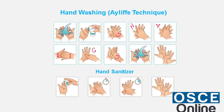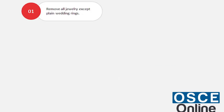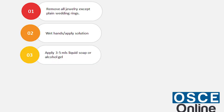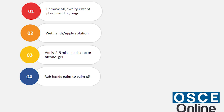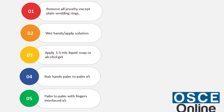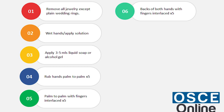For the AYLIFT hand washing technique, the whole procedure should take at least 30 seconds. Remove all jewelry except plain wedding rings. Wet hands, then apply three to five ml of liquid soap or alcohol gel. Rub hands palm to palm five times, then palm to palm with fingers interlaced five times, then back of both hands with fingers interlaced five times.